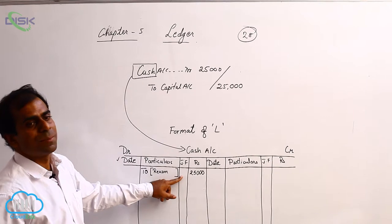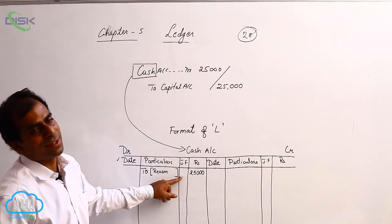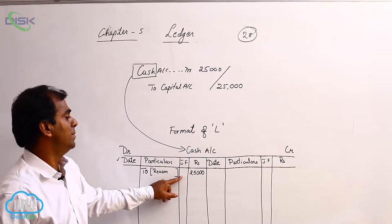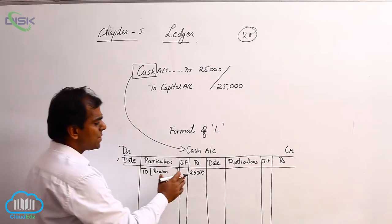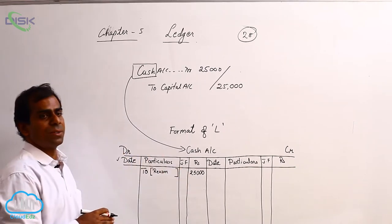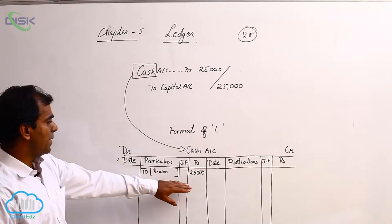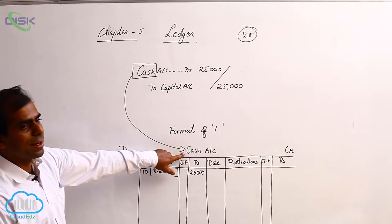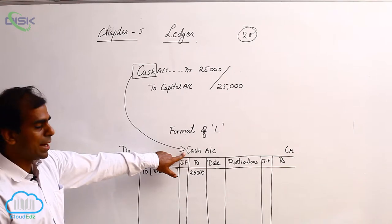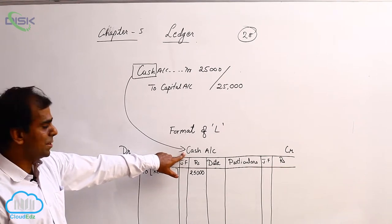Of course, in the problem, when it is given, you will be entering. Otherwise, you will not enter. Now, coming to the amount column, we enter, for example, we are taking, in our example, cash ledger as our example.